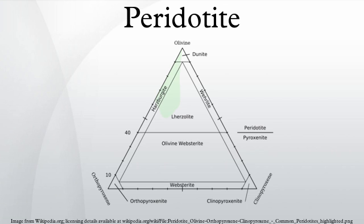Magnesium-rich olivine forms a large proportion of peridotite, and so magnesium content is high. Layered igneous complexes have much more varied compositions, depending on the fractions of pyroxenes, chromite, plagioclase, and amphibole. Minor minerals in peridotite include plagioclase, spinel, garnet, amphibole, and phlogopite. In peridotite, plagioclase is stable at relatively low pressures, aluminous spinel at higher pressures, and garnet at yet higher pressures.